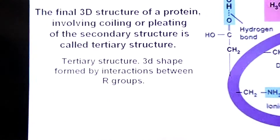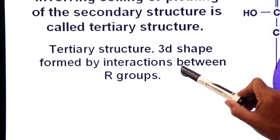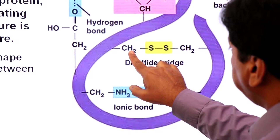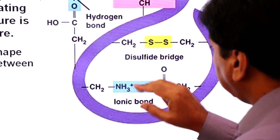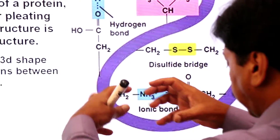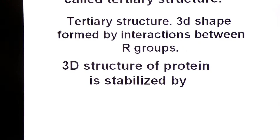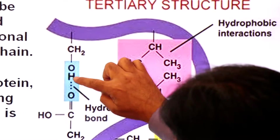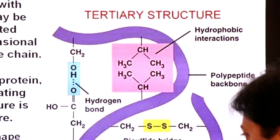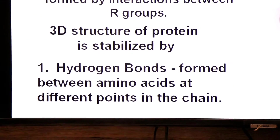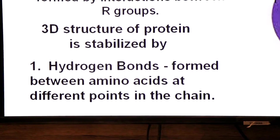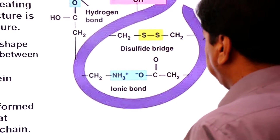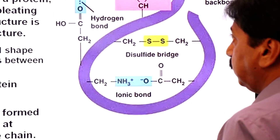The tertiary structure is formed by the interaction between R groups. You can see R groups here with a disulfide bond between them — this is the interaction of different R groups. The 3D structure of protein is stabilized first by hydrogen bonds, which are formed between amino acids at different points, and second by disulfide bonds — a strong S–S bond formed between sulfur atoms.